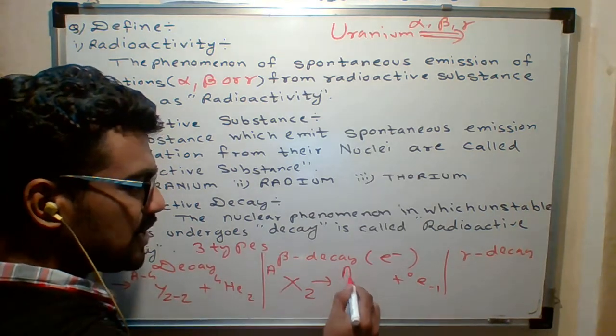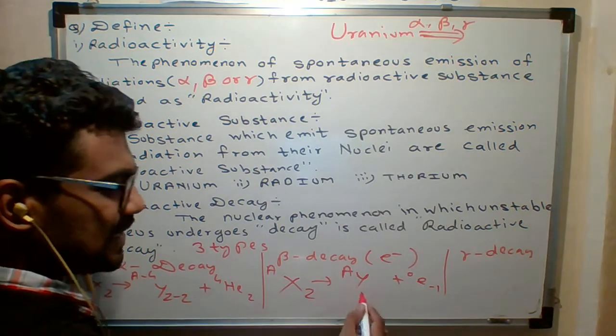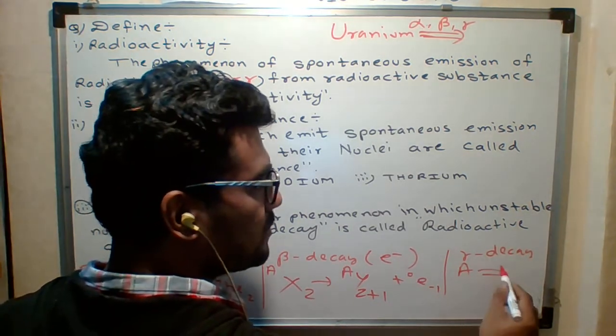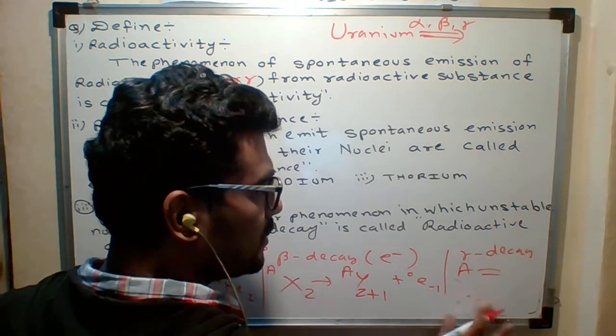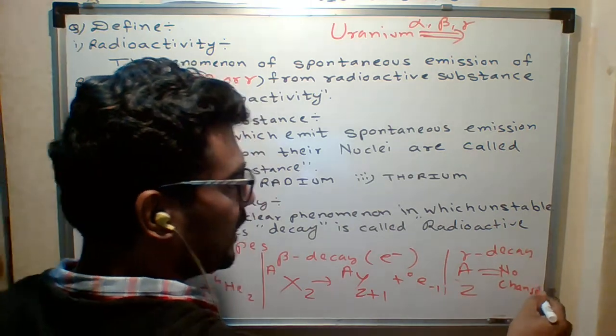So here, what happens? There is no change in atomic mass number in daughter element. Atomic number is increment by 1, Z+1. And here there is no change in atomic mass number, atomic number. In gamma, there is no change in atomic number and atomic mass number.